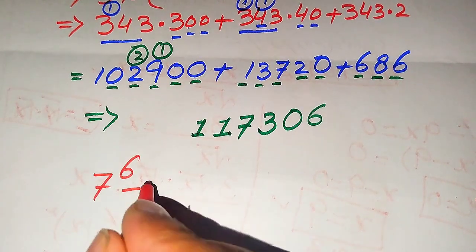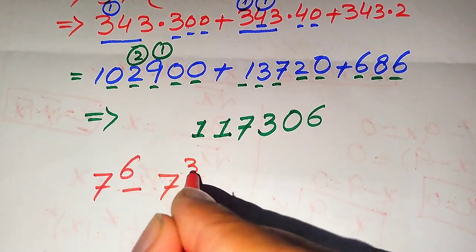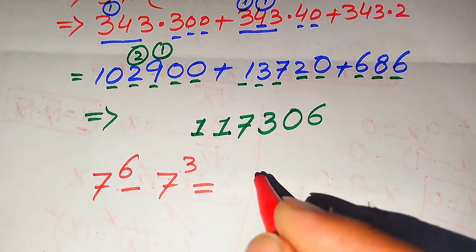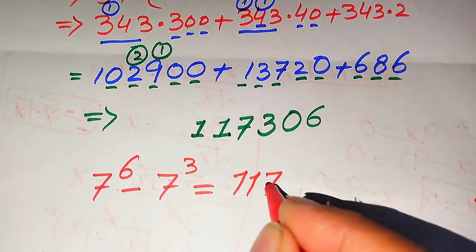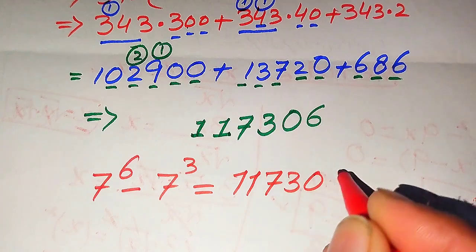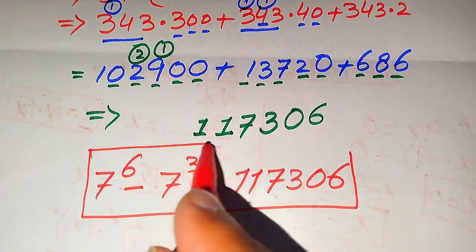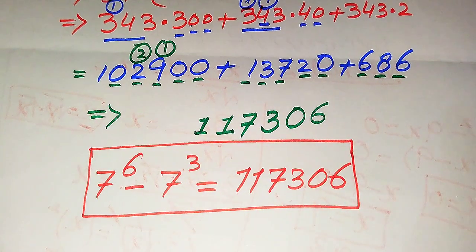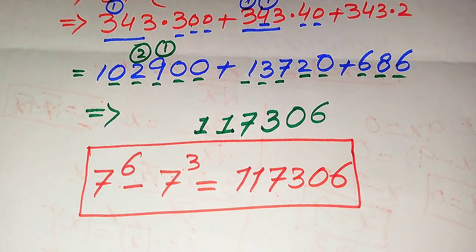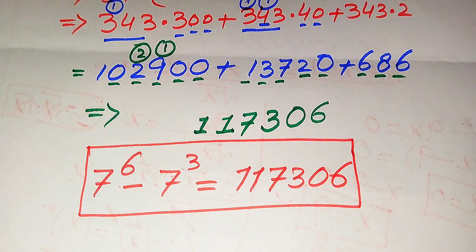We now write our final simplified form: 7 to the power of 6 minus 7 to the power of 3 equals 117,306. I hope you like this method. If you have any other method in mind, please don't hesitate to write it in the comment section. Thank you so much for watching this video — please subscribe to my channel for more exciting videos.